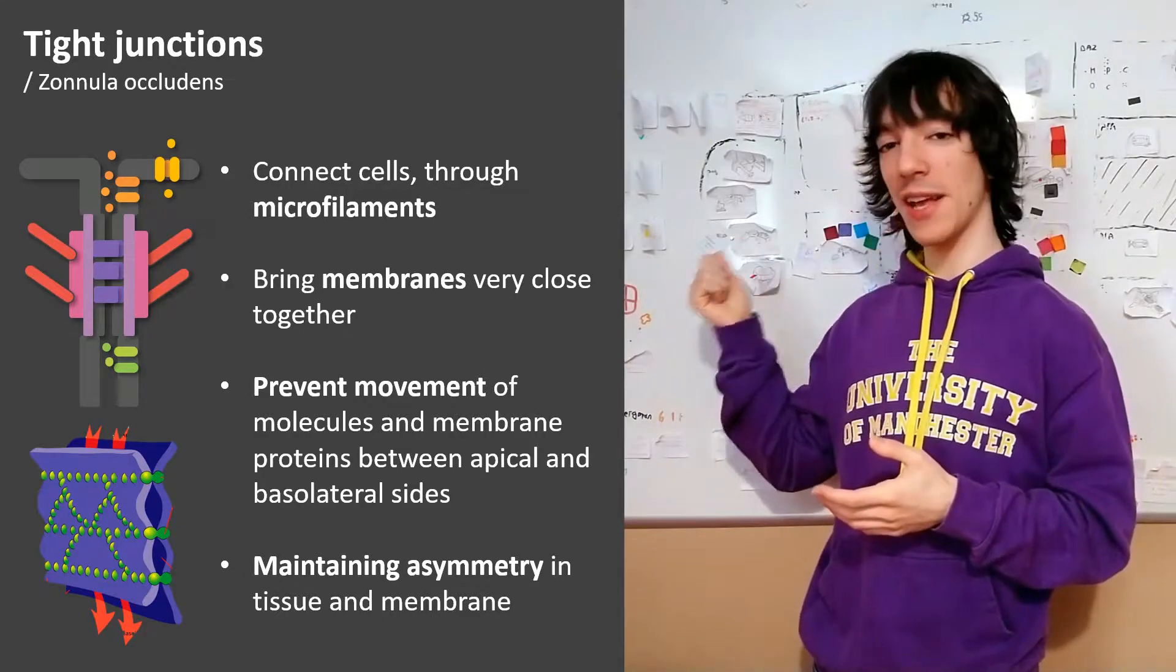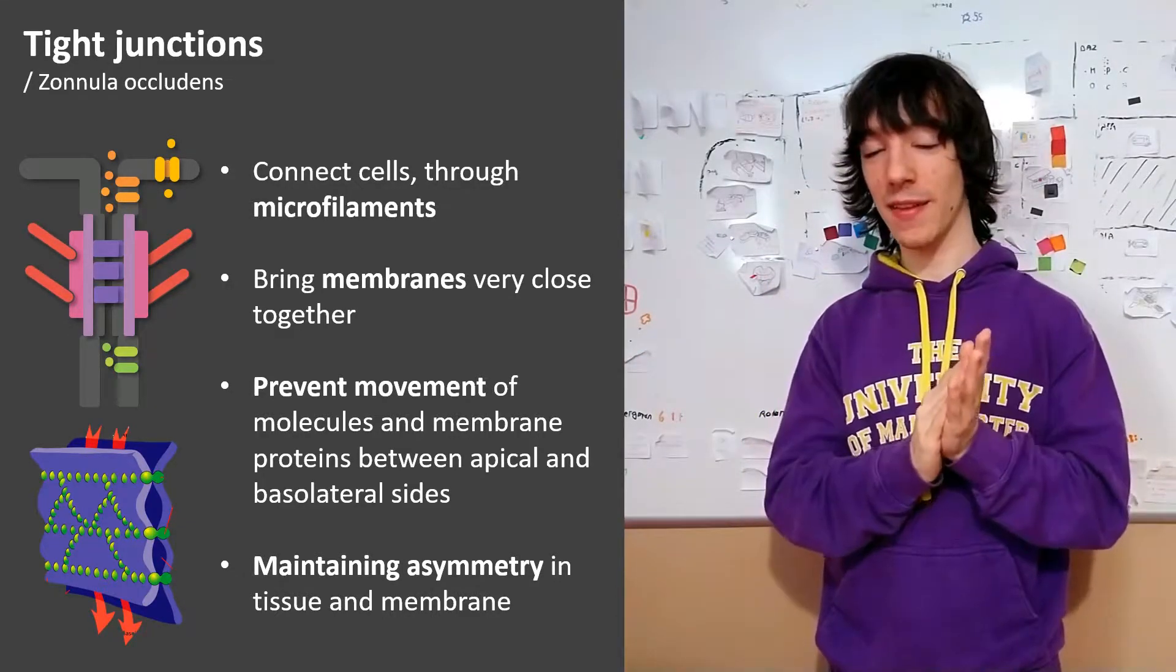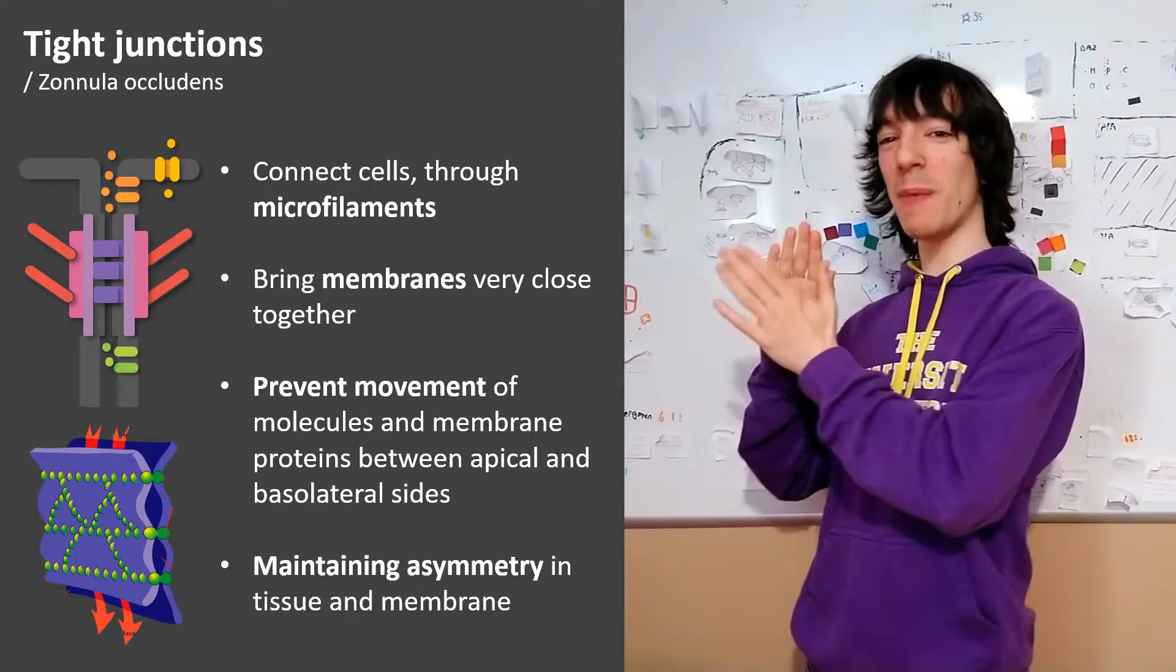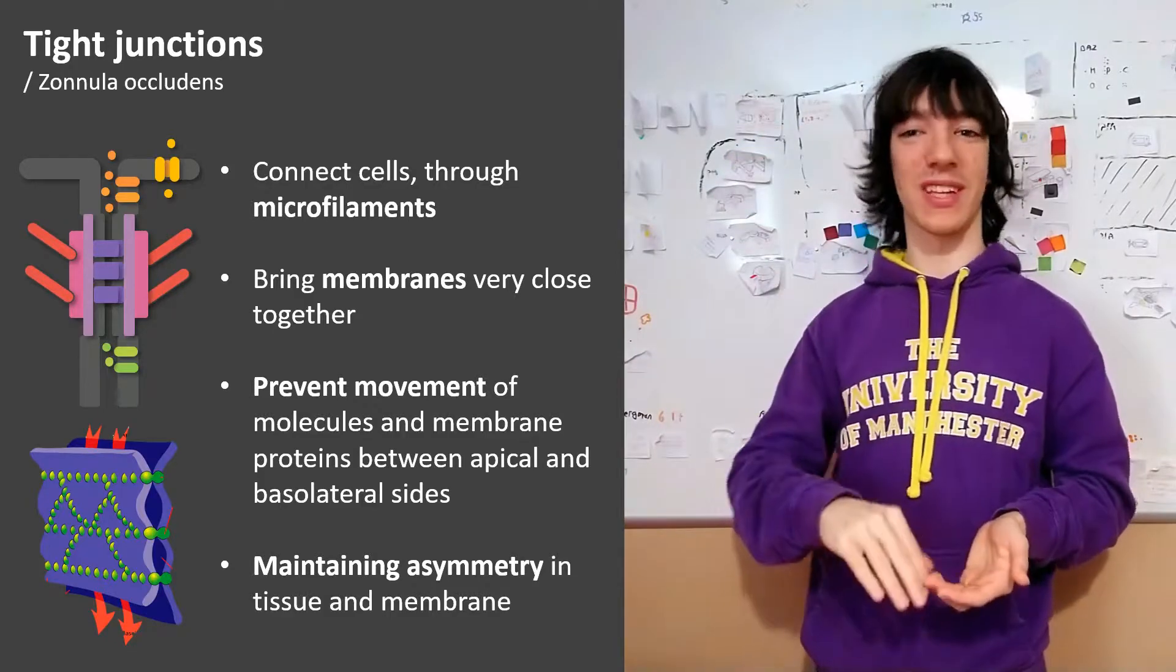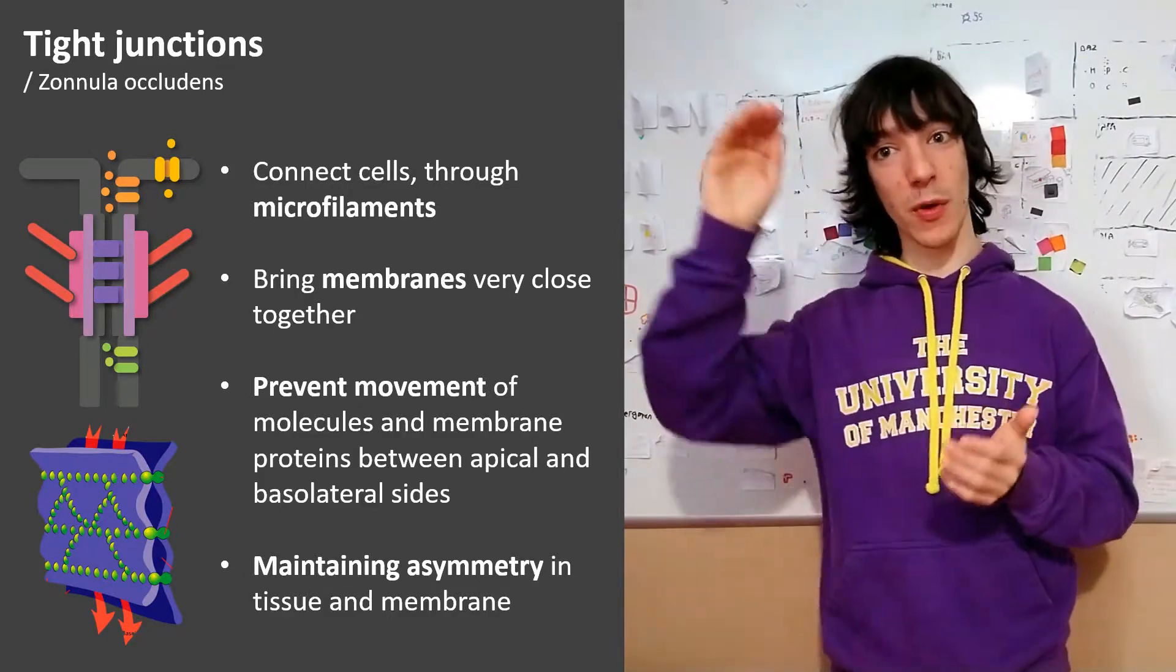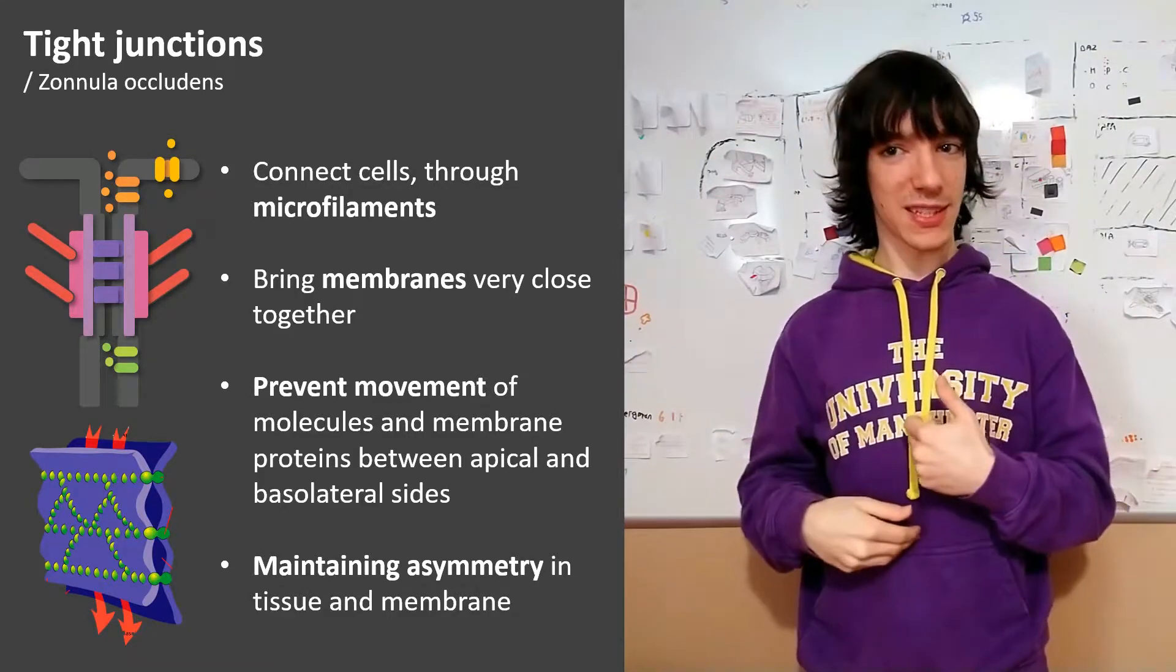We find the tight junctions closest to the apical side. In fact, they are the closest to the apical side kind of junctions. All of the other ones are below the tight junctions in cells with apicobasal polarity, like the cells in our intestines.